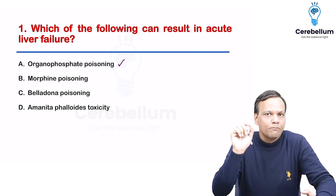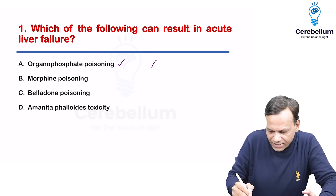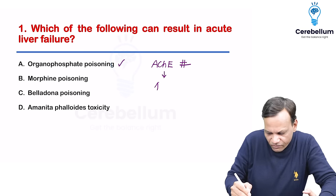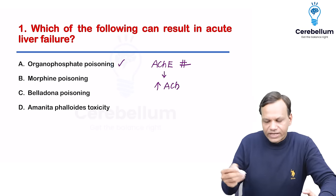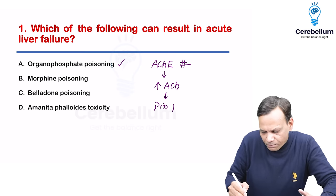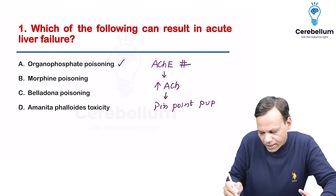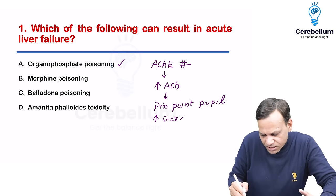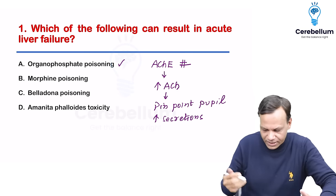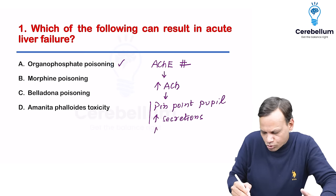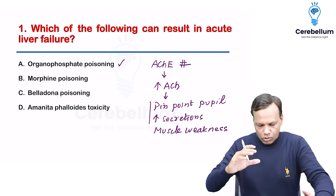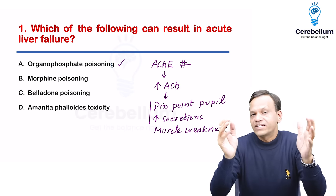Organophosphates like malathion and parathion are acetylcholinesterase inhibitors. By inhibiting this enzyme, they increase the level of acetylcholine. When acetylcholine levels increase, there will be cholinergic symptoms like pinpoint pupils (miosis), increased secretions — salivation, lacrimation, diarrhea — plus muscle weakness due to stimulation of nicotinic receptors. Organophosphate poisoning does not cause liver failure.